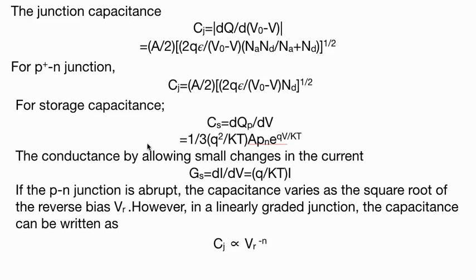If the p-n junction is abrupt, the capacitance varies as the square root of the reverse bias. If it is linearly graded, then n value is 1/3.